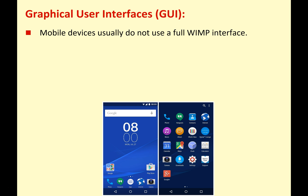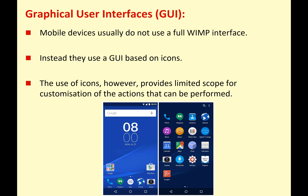However, mobile devices don't usually have a full WIMP interface. Instead, they use a GUI based on icons — here are a couple of examples from Google's Android system, and you can see there's just a lot of icons that we can select. While the use of icons makes them very user-friendly and intuitive — we've all seen very young children using an iPad — it does limit the scope for customization of actions that can be performed. On a small screen you can't have a full WIMP interface with all the menus and drop-downs, but by getting rid of those you simplify the operating system, making it more difficult to perform advanced commands.